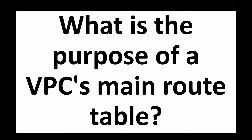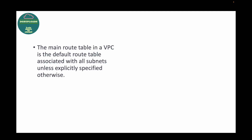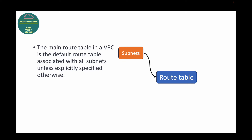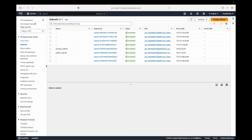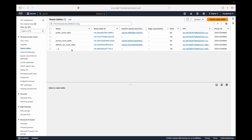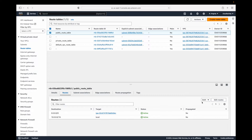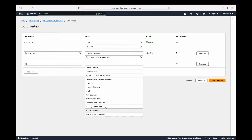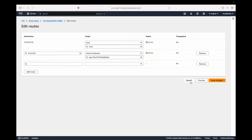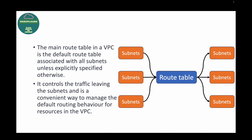The next question is: what is the purpose of a VPC's main route table? The route table is a very important component of your VPC and it basically allows us to do all the routing — for example, from subnet A where the traffic should go, like subnet X. The routing is done by your route table. You can define which range you want to accept and then where you want to send it.